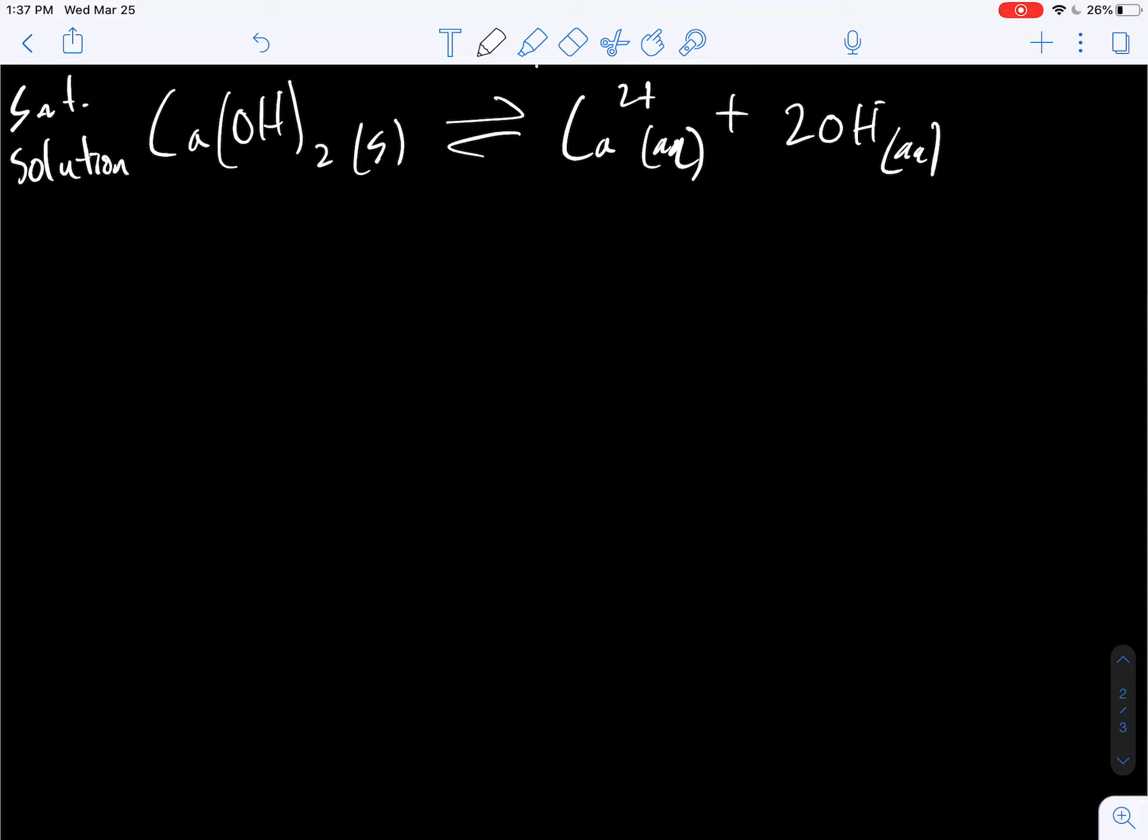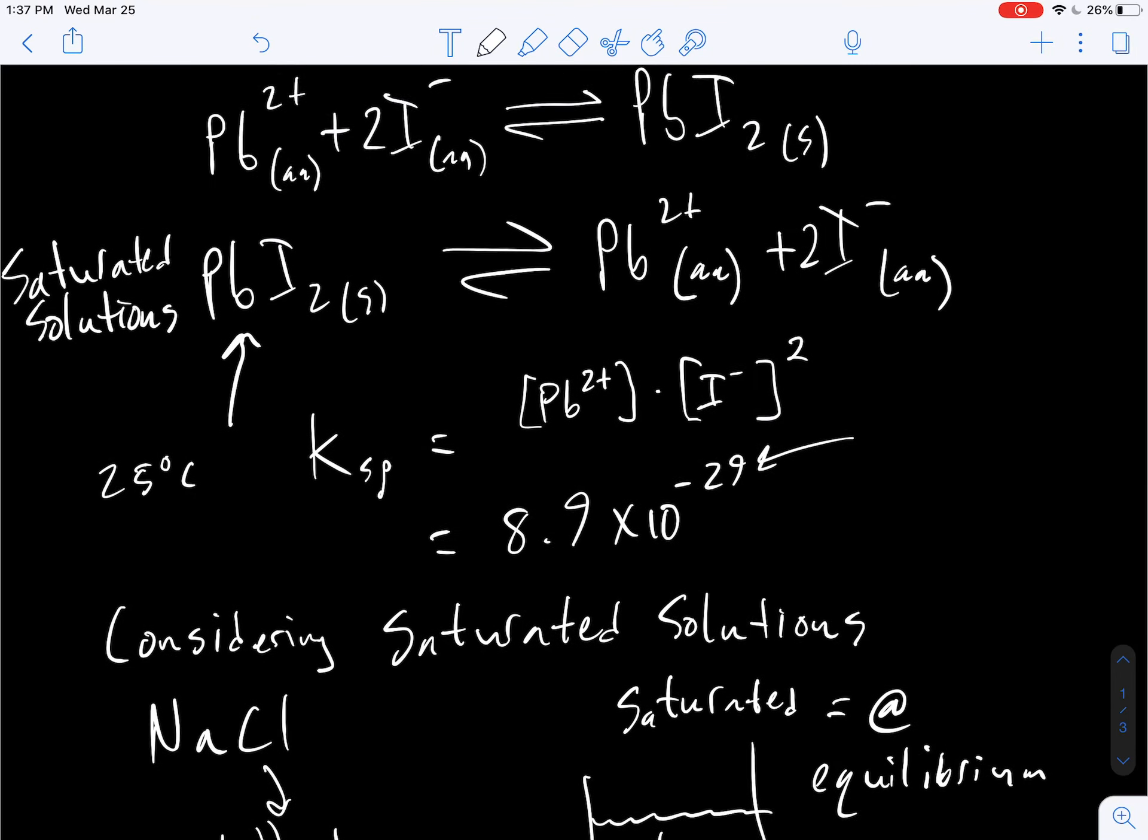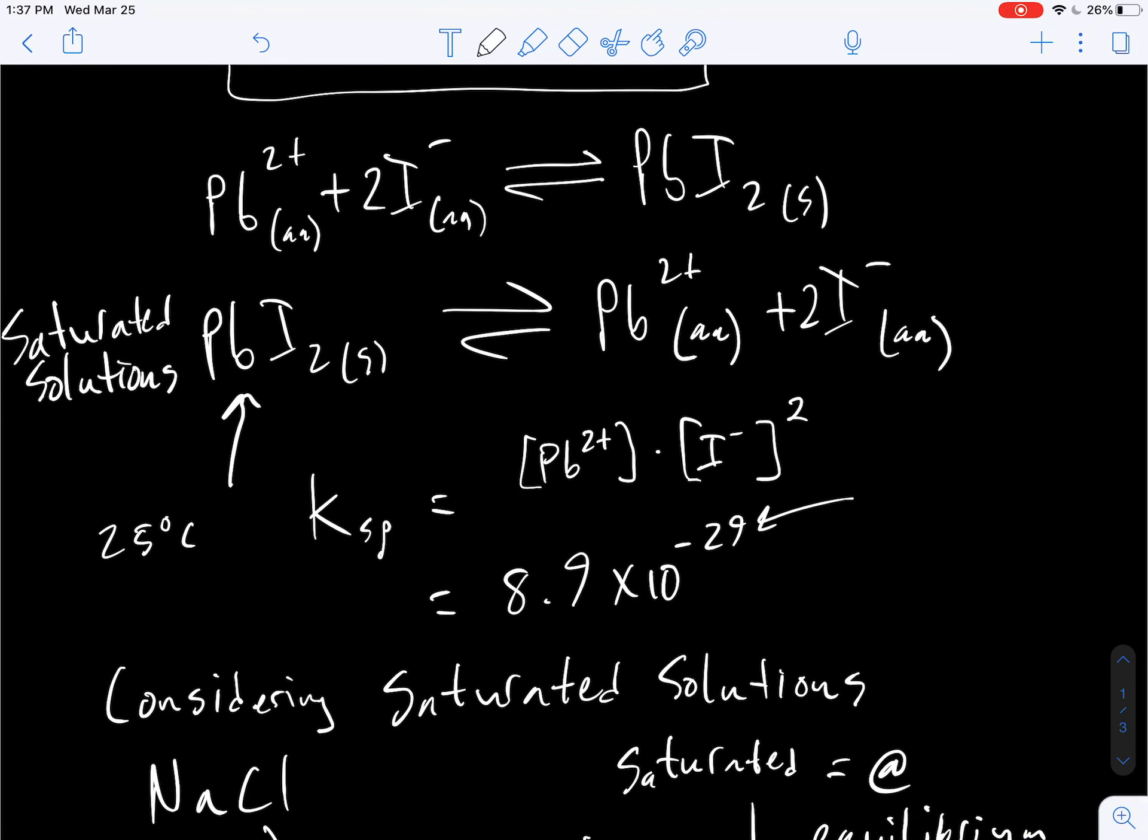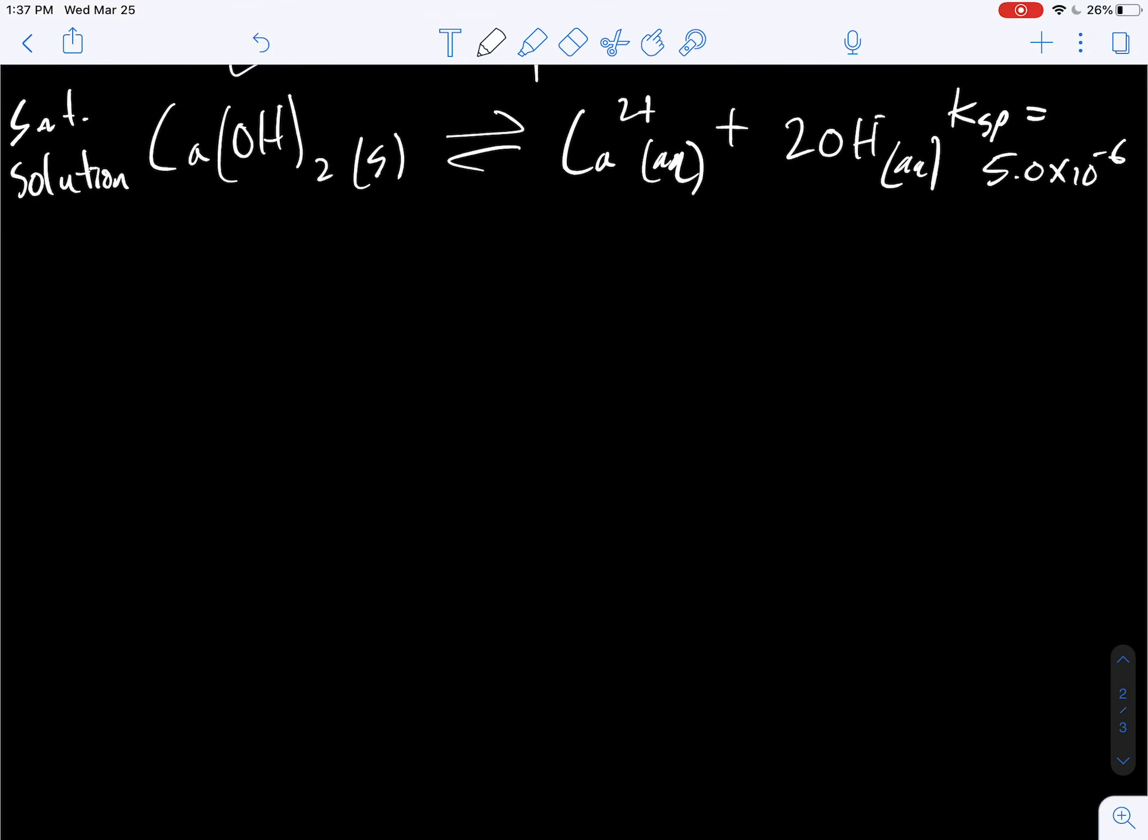So, we would like to find out the solubility of this compound. And one more thing we know, Ksp equals 5.0 times 10 to the negative 6. Seems small, but remember, compared to lead iodide, negative 29th, that is a completely insoluble compound, essentially. This, though, there's actually a significant amount of this can dissolve in a liter of solution.